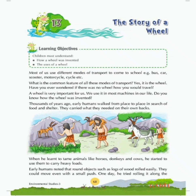early humans walked from place to place in search of food and shelter. They carried what they needed on their own backs. When he learned to tame animals like horses, donkeys and cows, he started to use them to carry heavy loads. Early humans noted that round objects such as logs of wood rolled easily. They could move even with a small push.